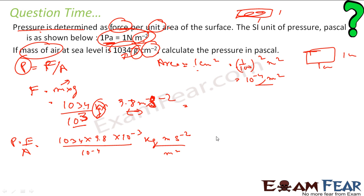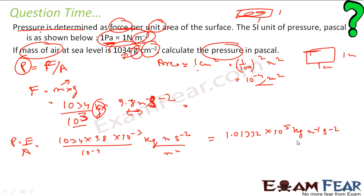If you solve this, you get approximately 1.013 × 10⁵ kg per meter per second square. This is my pressure. Now I have to find this pressure in pascals. This unit is actually Newton per meter square, because kg × m/s² = Newton. So this is Newton per meter square.